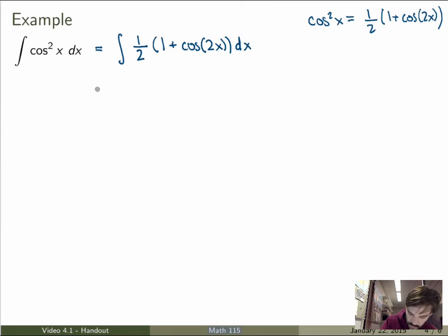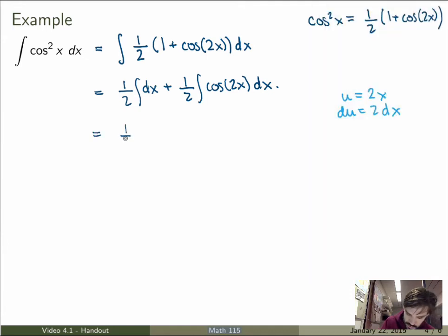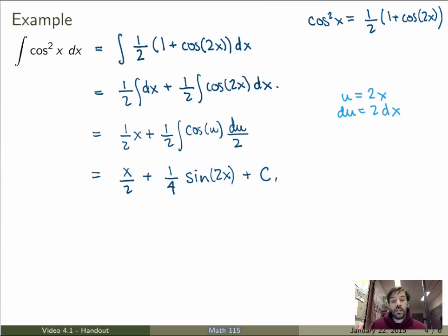which I can split into two integrals: first ½ dx plus ½ of integral of cos of 2x dx. Now that's great! First integral I can do directly, the second one I just do a simple substitution, u equals 2x, du equals 2 dx. What do I get? Well, the first thing will give me ½ times x plus ½ under the substitution, I get cos of u, which gives me ½ times the integral of cos of u, which is just sin of u, but u is equal to 2x, so I get sin of 2x plus a constant.